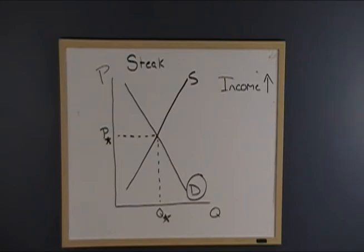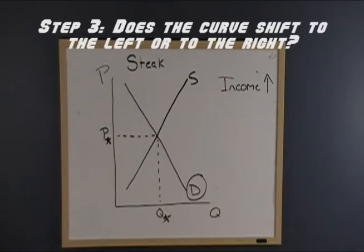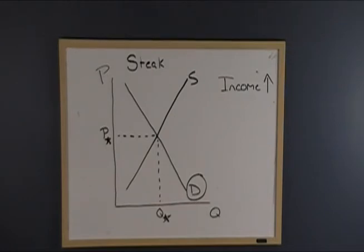Now we have to decide, does the curve being affected, that would be demand, shift to the left, a decrease, or to the right, an increase? Well, steak can be considered a normal good. As our income increases, we want to purchase more steak. Therefore, demand is going to increase.